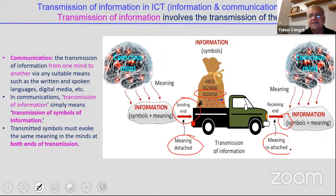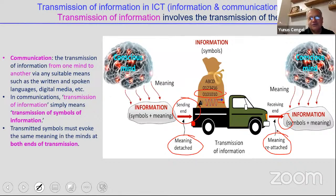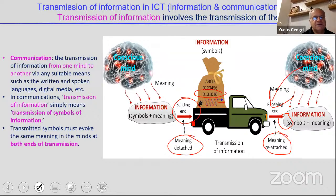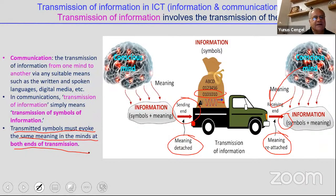When we send information, the meaning is detached. Once the information reaches the other side, the meaning is reattached. If I send you a sentence, all I send is what you see — I don't send any meaning. If you don't speak English, it's just a bunch of things. You reattach the meaning from your own mind. The transmitted symbols must evoke the same meaning in the minds at both ends of transmission.